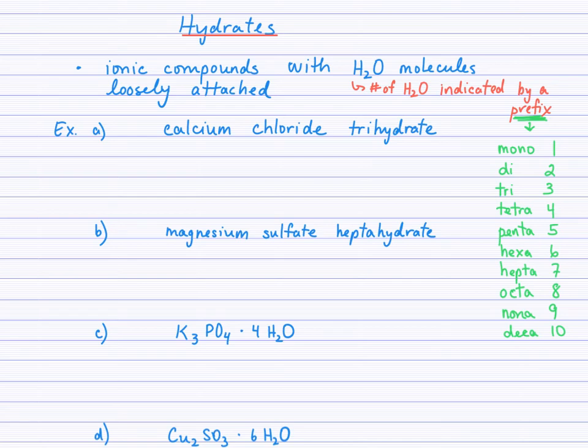Hydrates. If you understand the naming and formulas of ionic compounds, then you'll find hydrates are a subtle little twist on those. Basically, ionic compounds sometimes have water molecules loosely attached to their crystals and their crystal lattice. The number of water molecules is indicated by a prefix in the name. So for example, in example A, you see calcium chloride trihydrate, so that tri tells us that there are three water molecules associated with each formula unit of the calcium chloride.